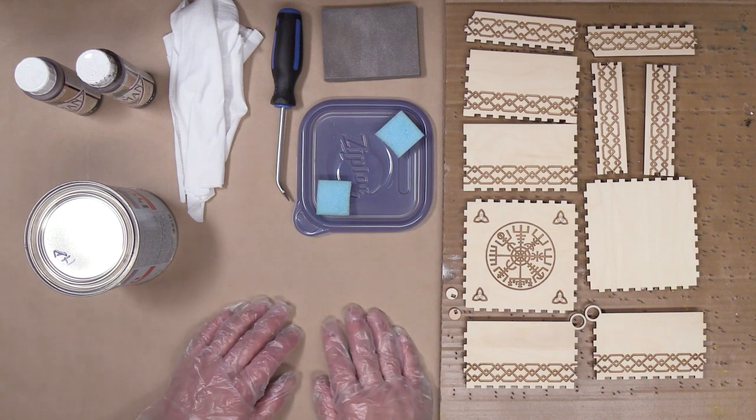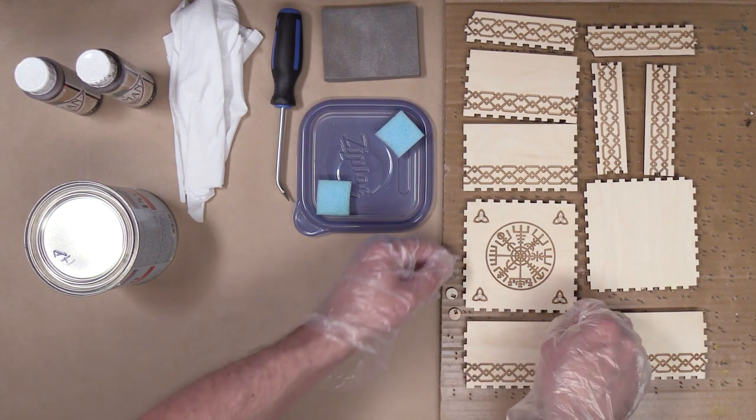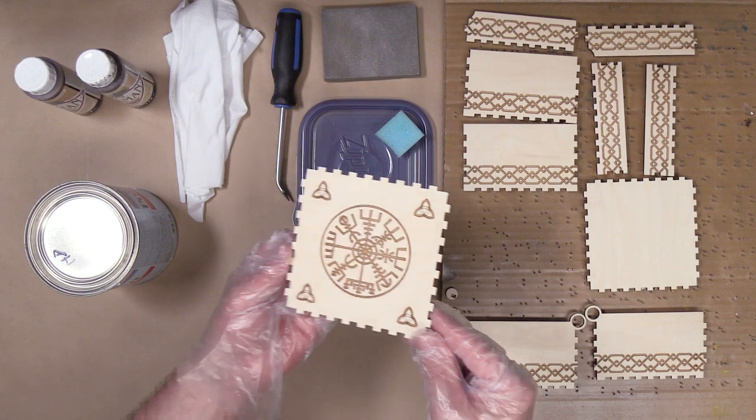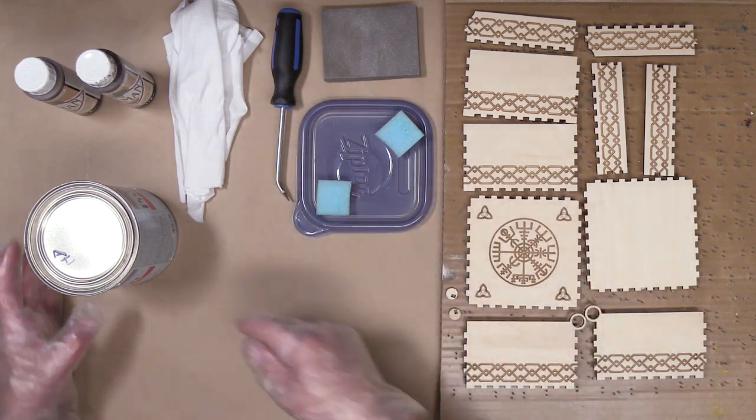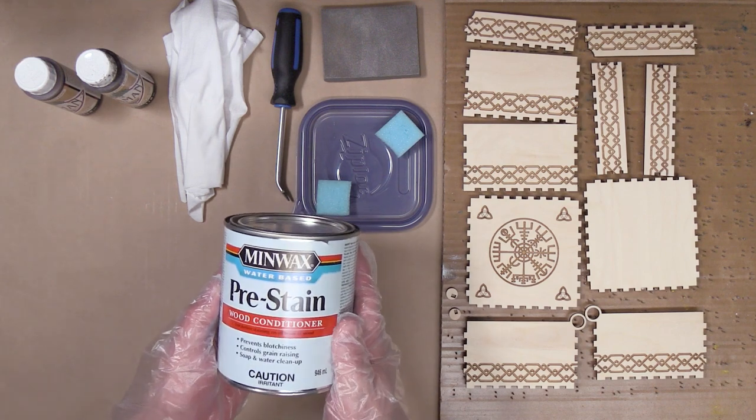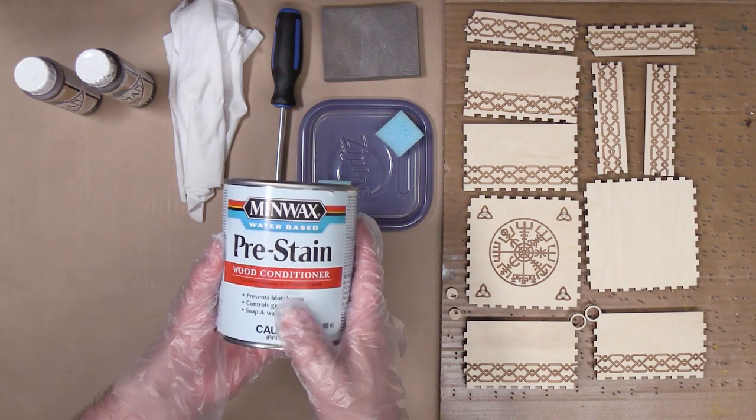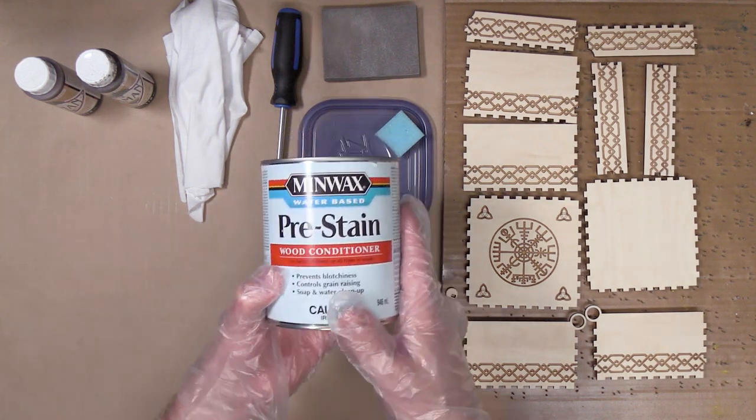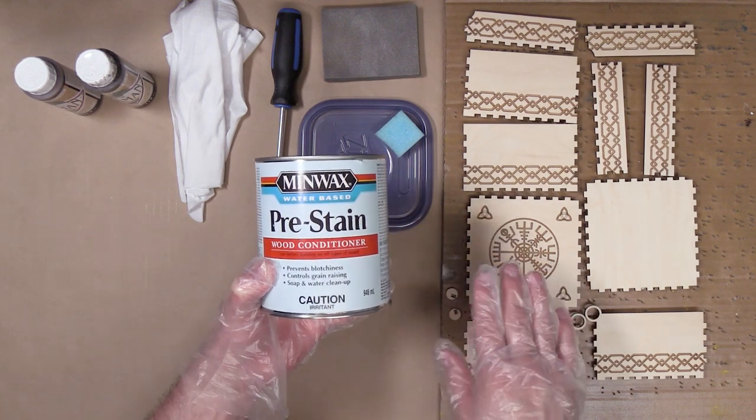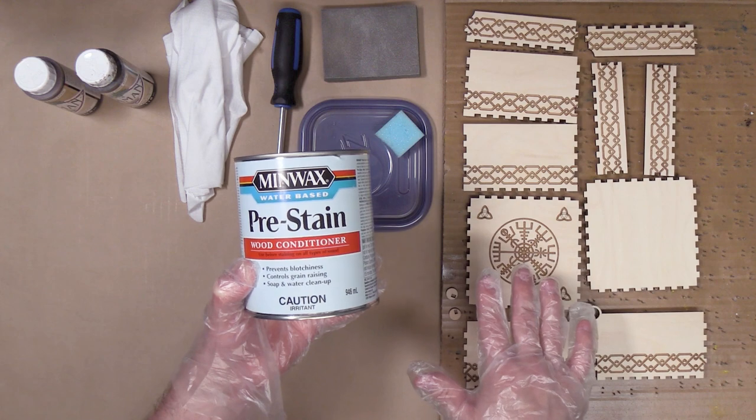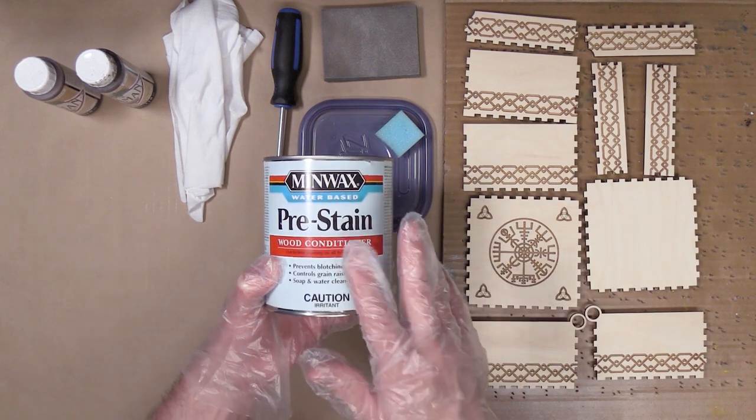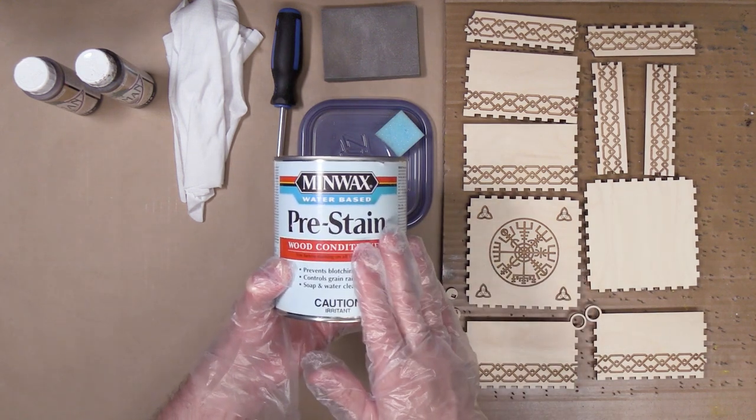After the lasering process was done, I went ahead and sanded each piece with 220 grit sandpaper to remove any char burn marks from the laser. Before we start staining these, I'm going to go ahead and add a coat of Minwax water-based pre-stain to each one of these pieces. This will allow the stain to be applied evenly to the wood as opposed to kind of the blotchy effect that birch typically does if it doesn't have a pre-stain.